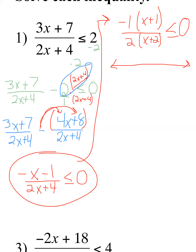On the number line I place -2 and -1. Now I ask myself whether I can actually include those two values. The -2 jumps out immediately — I cannot have that at all because it gives a zero in the denominator, so -2 is out (open circle). But -1 would make the numerator zero, which is fine. Since the left-hand side equals 0, and 0 ≤ 0 is true, I can include -1 in my solution (closed circle).